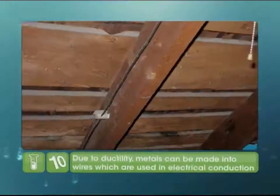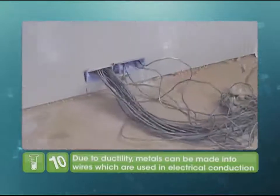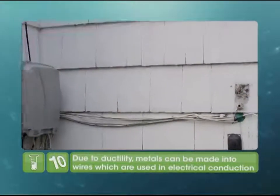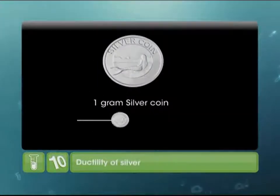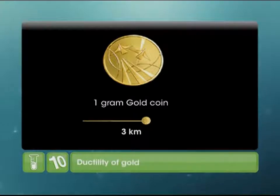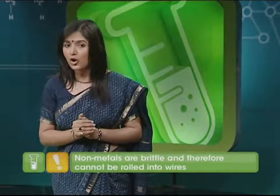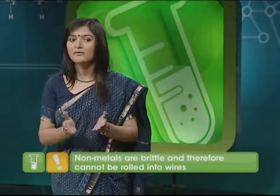Yet another property of metals is that we can beat metals into really thin wires. This is because of the ability of atoms of metals to roll over each other and occupy new positions without breaking. The electrical connections at our homes are possible due to this wonderful property. Very thin metal wires carry huge amounts of electricity from electricity poles to our houses. One gram of silver can be drawn into two kilometers of silver wire, and one gram of gold can be pulled to a thread of up to three kilometers. Metals that do not exhibit this property are lead, sodium and potassium, because they have low tensile strength. Non-metals are brittle and therefore cannot be rolled into wires.